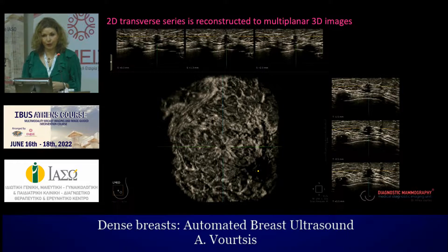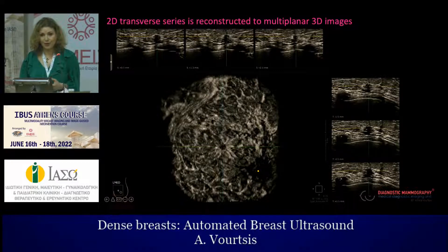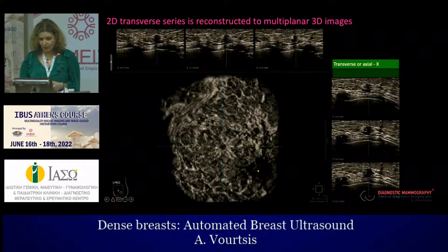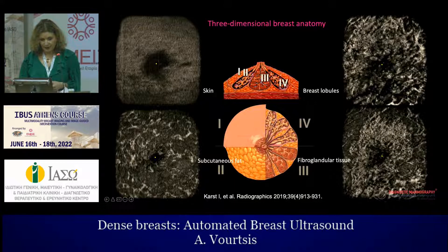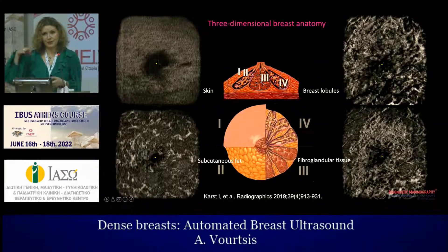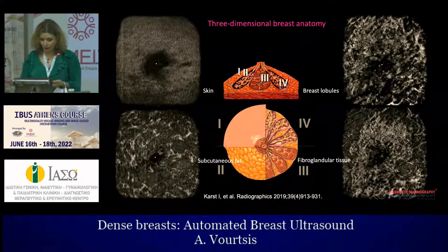A special software converts the 2D image into 3D reconstructed multiplanar images. We have a coronal image with a large field of view of 15 cm wide — almost three times larger than handheld breast ultrasound — as well as transverse and sagittal images. We can see the 3D breast anatomy from the skin, subcutaneous fat, fibroglandular tissue, and breast lobules, scanning from the skin posteriorly to the thoracic wall.